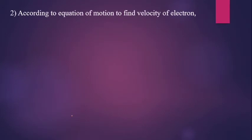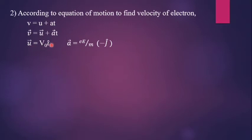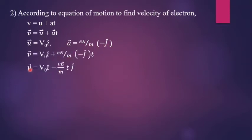According to the equations of motion, to find the velocity of the electron, we use v = u + at in vector notation: v-vector equals u-vector plus a-vector times t. The initial velocity u-vector equals v0 i-cap. The acceleration a-vector equals minus eE by m into j-cap. So the velocity of the electron in the uniform electric field becomes: v-vector equals v0 i-cap minus (eE by m) t j-cap.